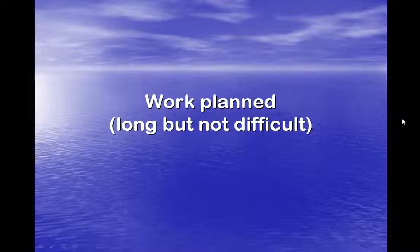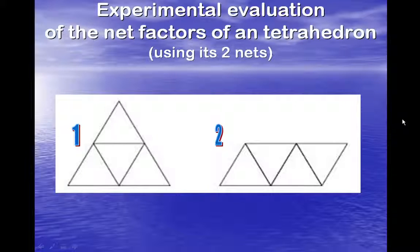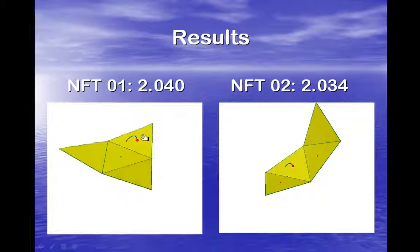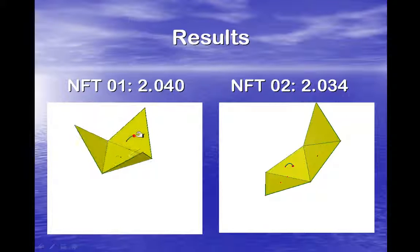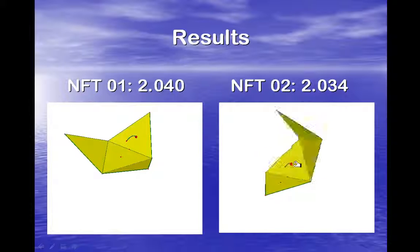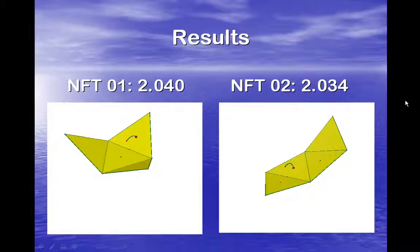This work is planned. It's long but not difficult. The experimental evaluation of the net factor of tetrahedra was done. That's the cabrinet and the other one. You can see the cabrinet is this one, and the other net I have constructed is this one. I've got very similar values for the net factor.